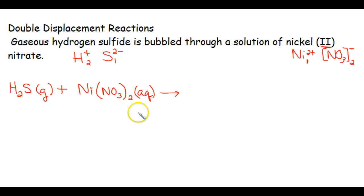Now the next part, you have to figure out who's going to hook up with who. Remember, opposite charges. It might help to write the charges above these things. Remember this was a plus 1 minus 2 plus 2 minus 1. So our hydrogen is going to hook up with nitrate and nickel is going to hook up with sulfur.